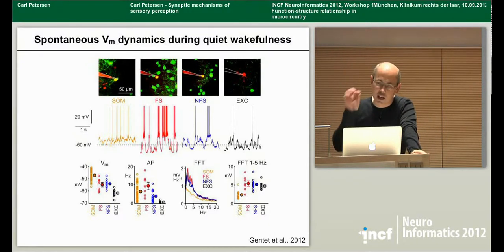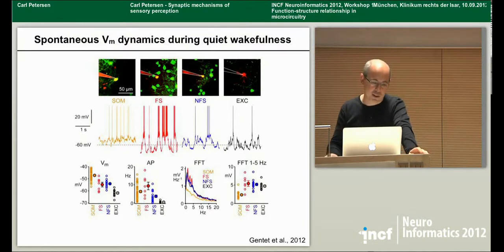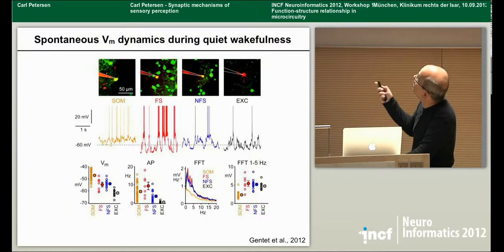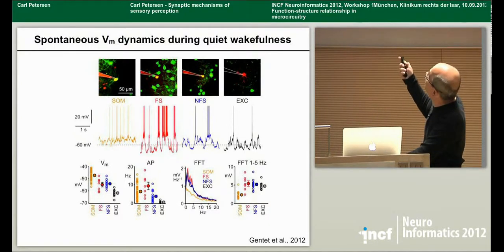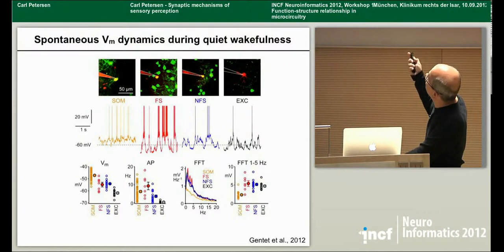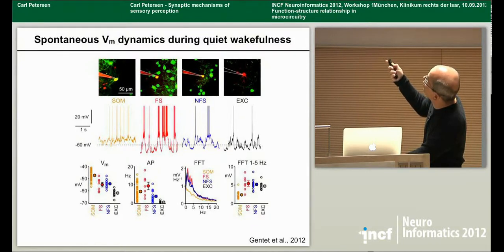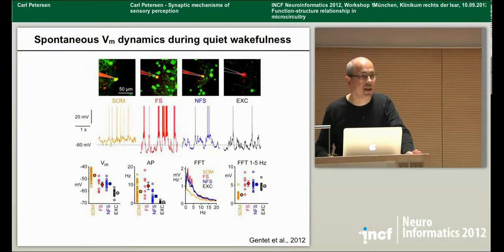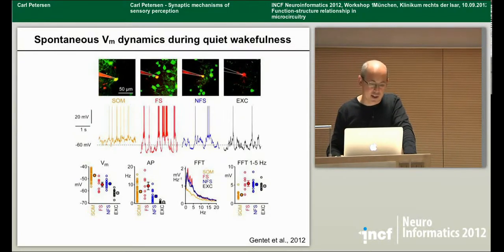During quiet wakefulness — when the animal is not moving — there are slow membrane potential fluctuations in basically all types of neurons. Excitatory neurons have large-amplitude membrane potential fluctuations: 20 millivolts over about one second — massive swings in membrane potential. These slow fluctuations are obvious in excitatory neurons, non-fast-spiking GABAergic neurons, and fast-spiking GABAergic neurons. The somatostatin cells are unusual — they seem to lack these slow oscillations, or at least they're much smaller. The Fourier transform shows a large slow-frequency peak for fast-spikers, non-fast-spikers, and excitatory neurons, but that power is about halved in somatostatin-expressing neurons.